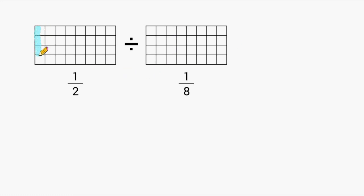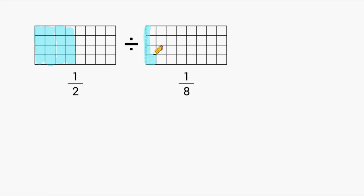Let's go ahead and highlight half of this figure. This is a 4 by 8 configuration, so we have a total of 32 square units covering this rectangle. We need to shade 16 of the 32 squares, because 16 out of 32 represents 1 half of the entire figure. Then we'll shade 4 of the 32 squares for the second figure, because 4 out of 32 simplifies to 1 eighth.